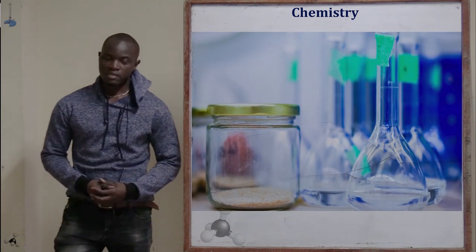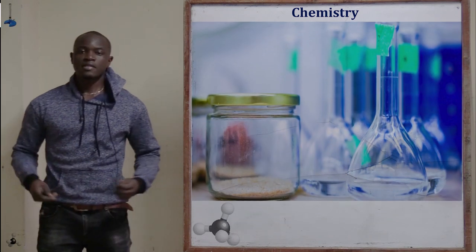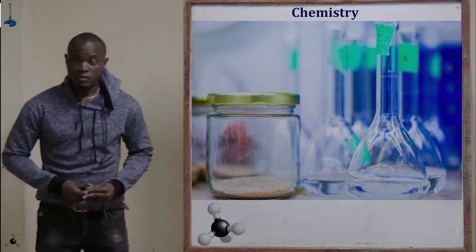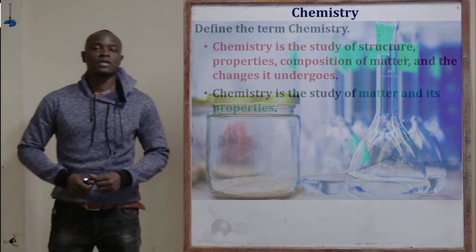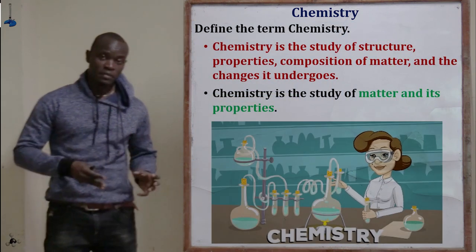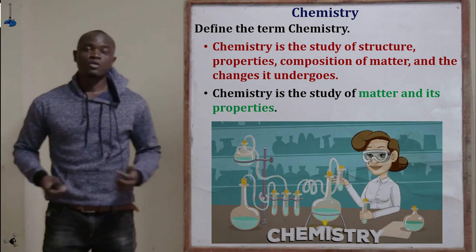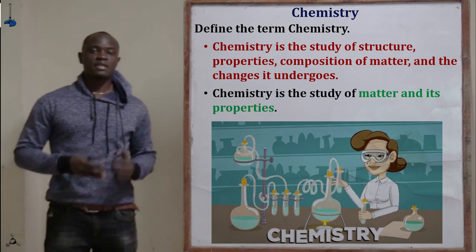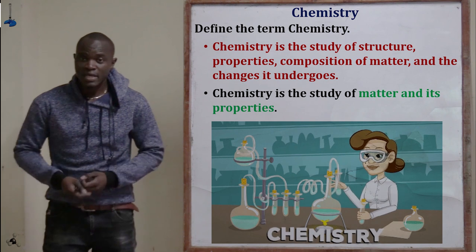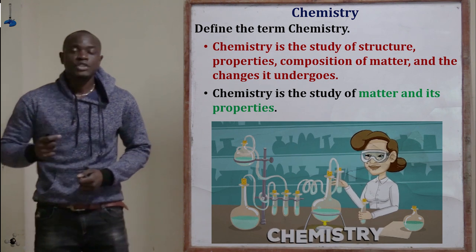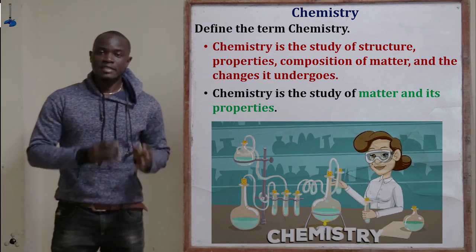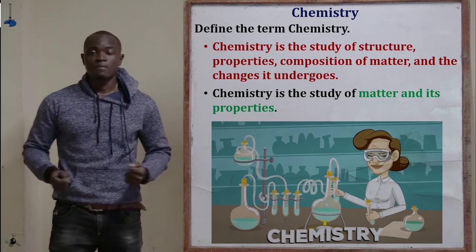Hello and welcome to this class. We'll look at a Chemistry Form 2 paper, beginning from the first question. The first question asks: define the term chemistry. Chemistry is the study of structure, properties, and composition of matter, and the changes that matter undergoes. That is the full definition of chemistry.